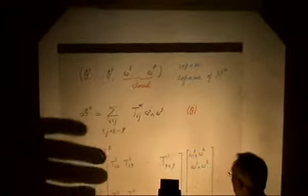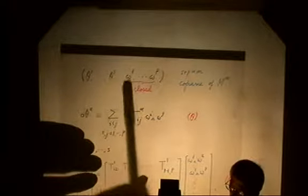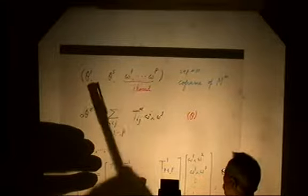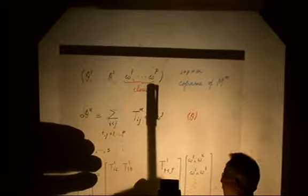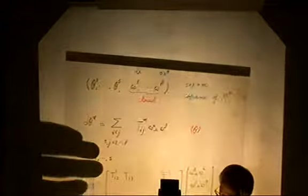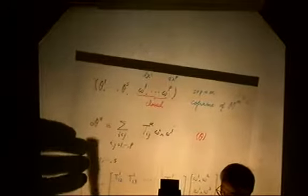To do that, I'll choose any coframe. I can choose closed forms to complete zeta to a coframe. Since this is a local problem, I may assume this is a coordinate coframe: dx1 through dxp.